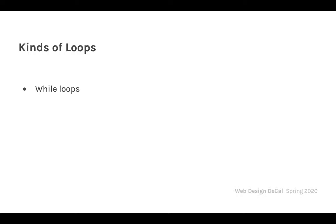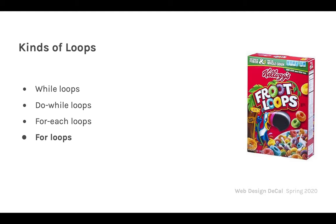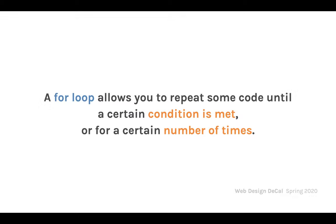There are several types of loops in code across programming languages: while loops, do-while loops, for-each loops, and for loops. In this class we're going to focus on for loops. Once you understand for loops, it's pretty easy to understand the others.